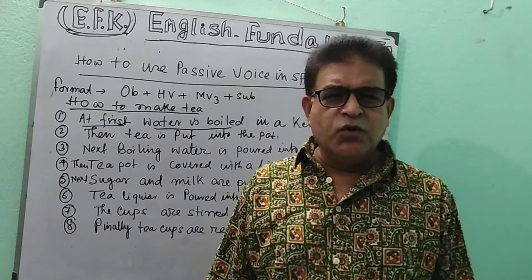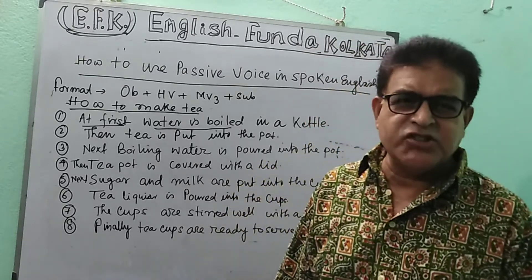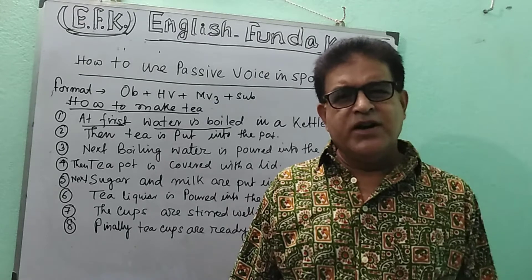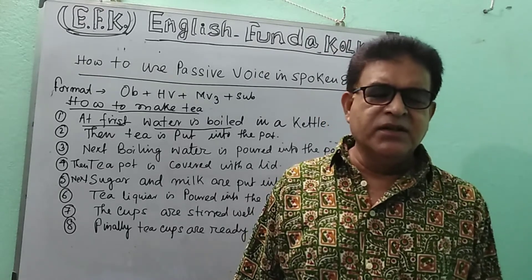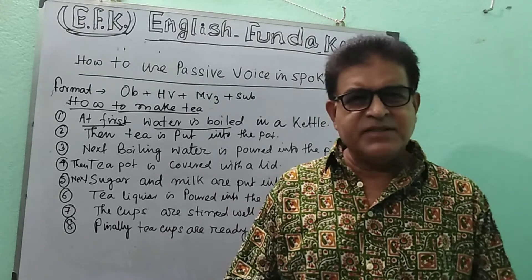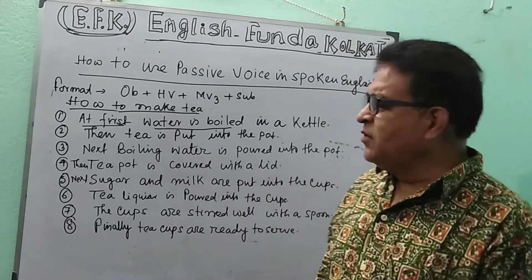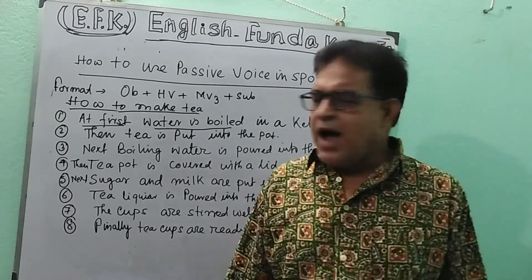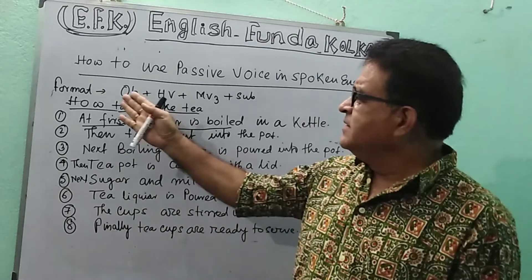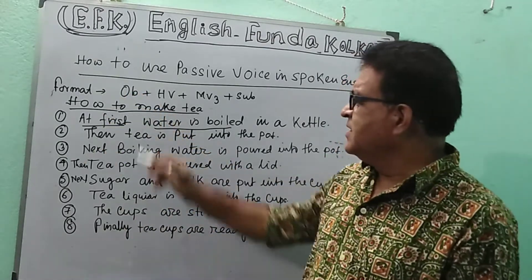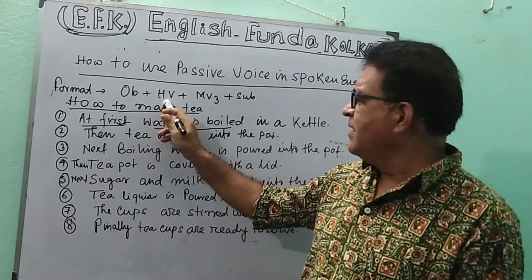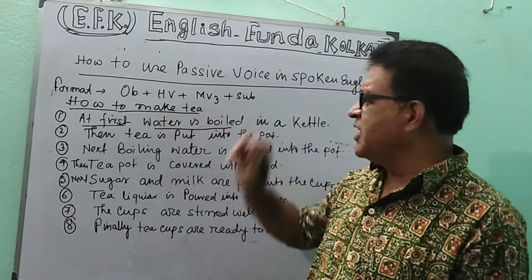Voice is of two types: active voice and passive voice. I have already discussed how to change an active voice to passive voice in the previous videos. In passive voice, the object comes first, then the helping verb, then the main verb (V3), then the subject.